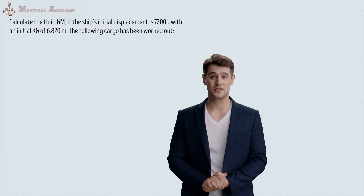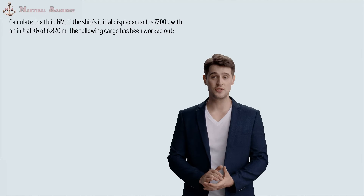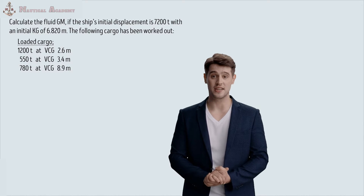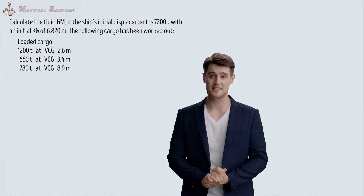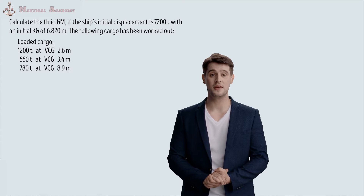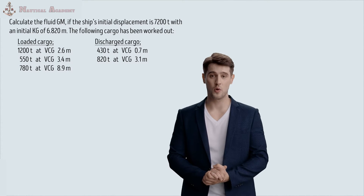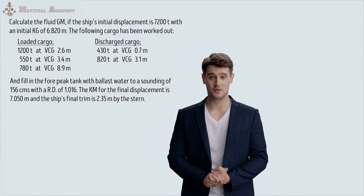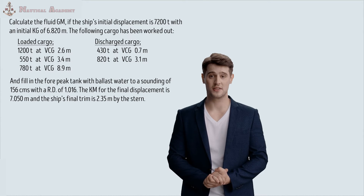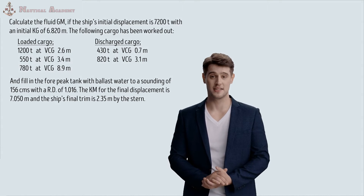The problem is: Calculate the fluid GM if the ship's initial displacement is 7,200 tons with an initial KG of 6.820 meters. The following cargo has been worked out: Load 1,200 tons at VCG 2.6 meters; 550 tons at VCG 3.4 meters; and 780 tons at VCG 8.9 meters. Discharge 430 tons at VCG 0.7 meter and 820 tons at VCG 3.1 meters. Fill the 4-peak tank with ballast water to a sounding of 156 centimeters with a relative density of 1.016. The KM for the final displacement is 7.050 meters and the ship's final trim is 2.35 meters by the stern. Calculate the effective GM.